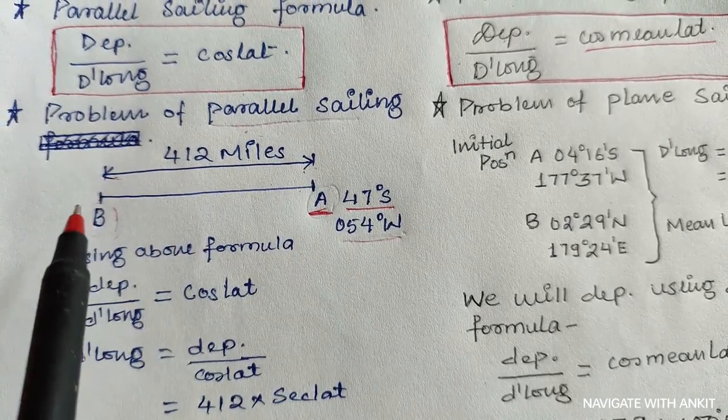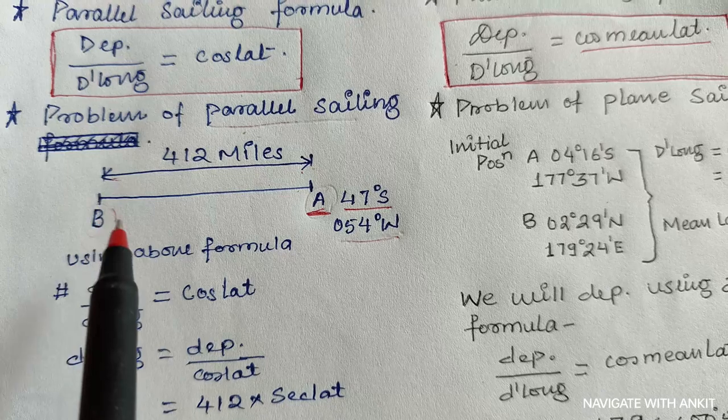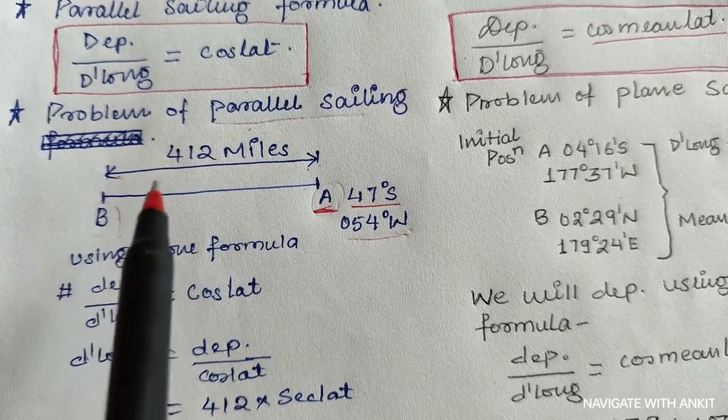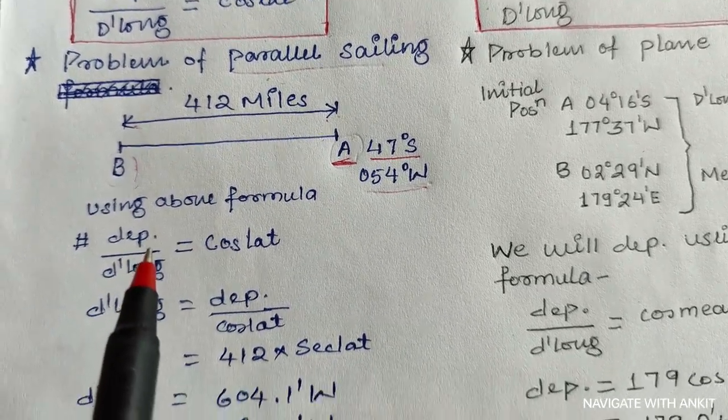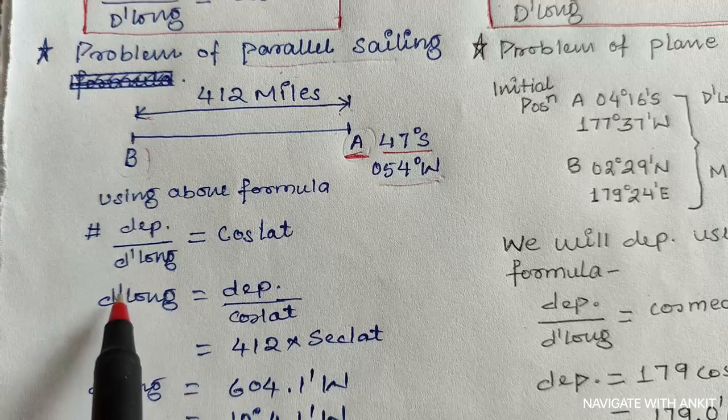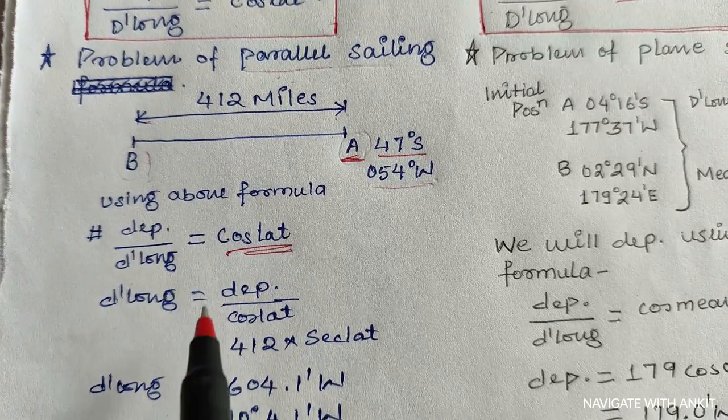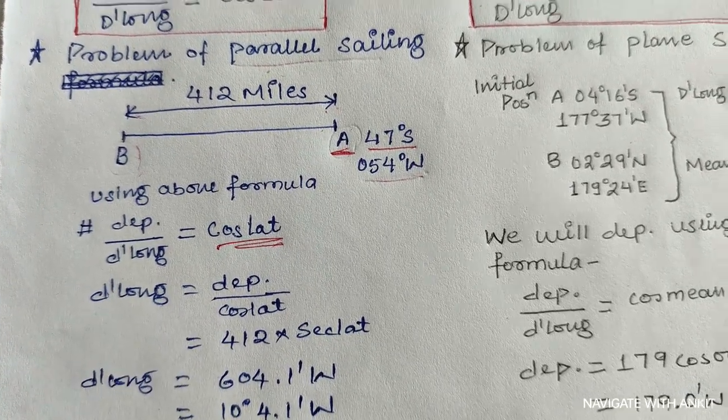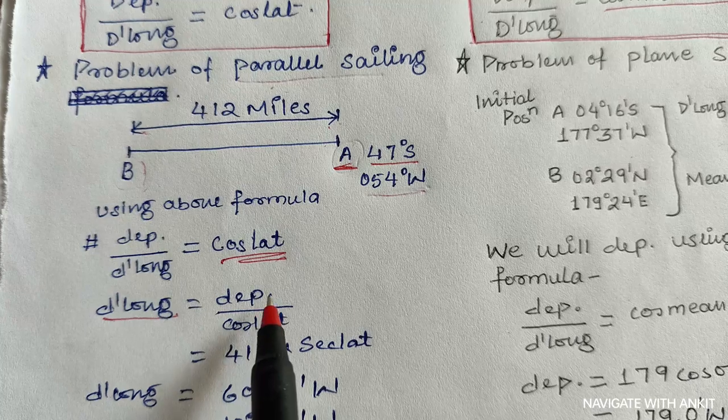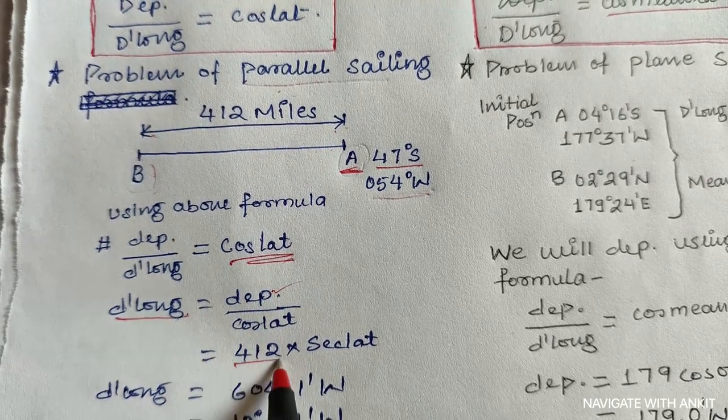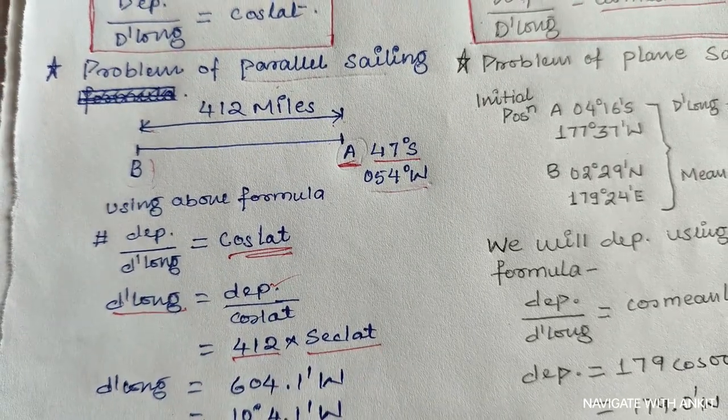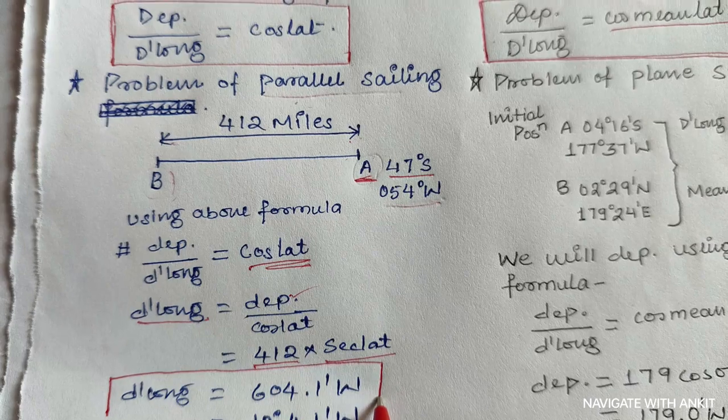As we all know that in parallel sailing, departure equals distance. So we will use the formula departure upon D'long equals cosine of latitude. From this formula we will get D'long, as departure equals distance. So 412 and cosine of latitude, and solving this you will get the D'long.